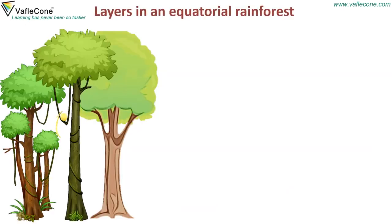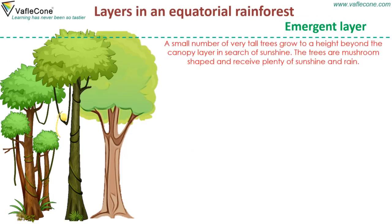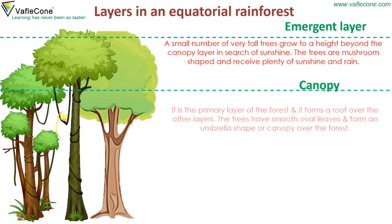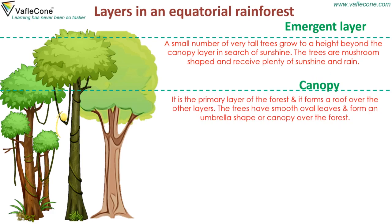Layers in an Equatorial Rainforest. Emergent layer: A small number of very tall trees grow to a height beyond the canopy layer in search of sunshine. The trees are mushroom shaped and receive plenty of sunshine and rain. Canopy: It is the primary layer of the forest and forms a roof over the other layers. The trees have smooth oval leaves and form an umbrella shape or canopy over the forest.